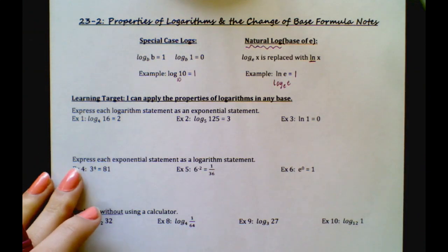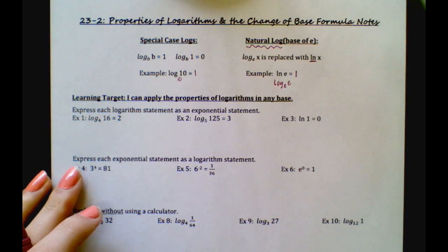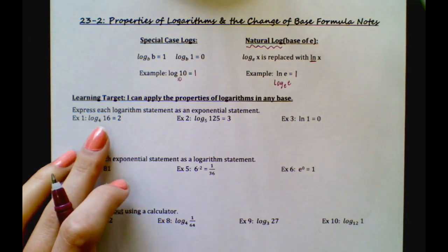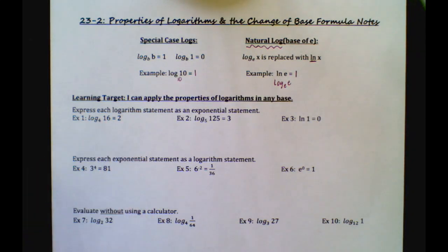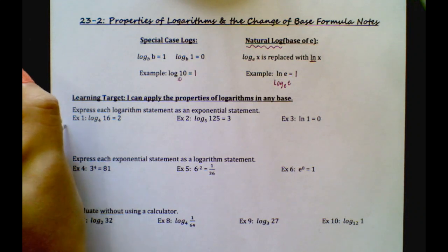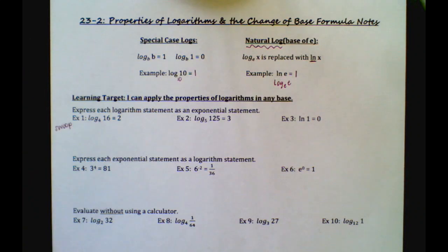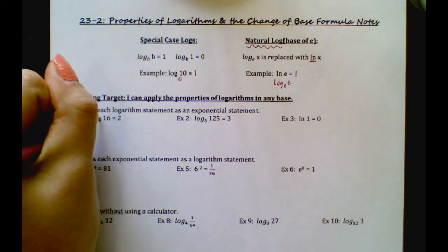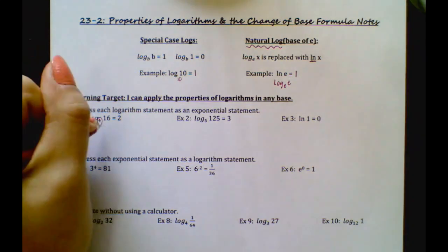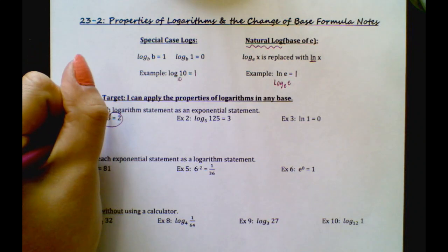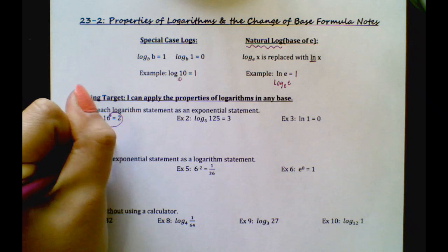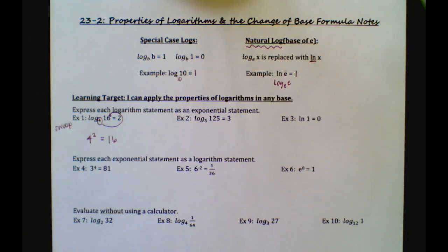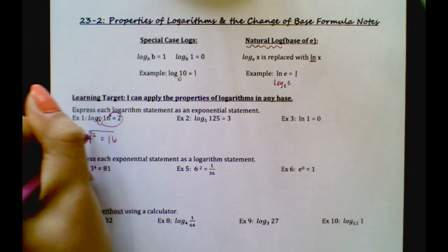It says express each logarithm statement as an exponential statement. Looking at example 1: log base 4 of 16 equals 2. Now, earlier you learned something called the swoop method, and we're going to carry that into this lesson. You circle your first number and just swoop it around. So this would be 4 to the second power equals 16. Let's think about that — is 4 squared 16? Yes, it is.